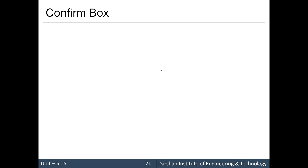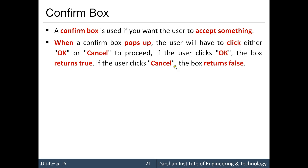The next is the confirm box. When you want a confirmation from the user — for example, before deleting anything — you want to make sure the user clicks OK to delete or can cancel that action. When the confirm box pops up, the user has to click either OK or Cancel. If the user clicks OK, the box returns true; if they click Cancel, the box returns false.